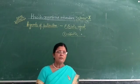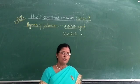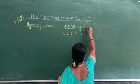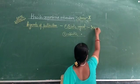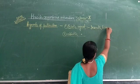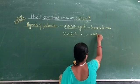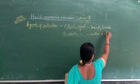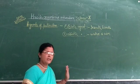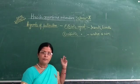Abiotic factors include water and air, by which pollen grains are transmitted from anther to stigma. Agriculture tools are also considered an abiotic factor and agent of pollination.